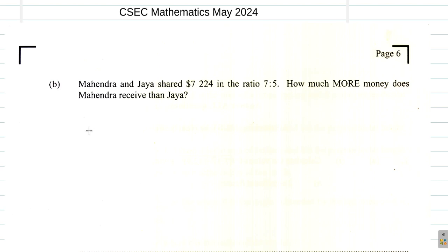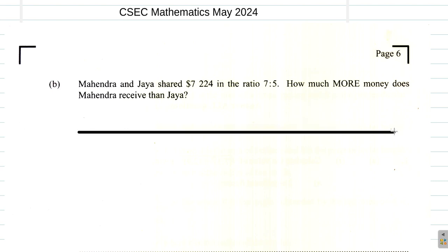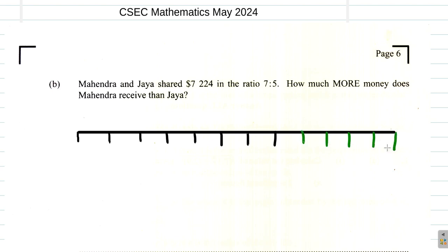Think of the $7,224 represented like a line cut into equal parts. You draw 7 parts for Mahendra's share and 5 parts for Jaya's share, giving you a visual of the ratio 7 to 5.